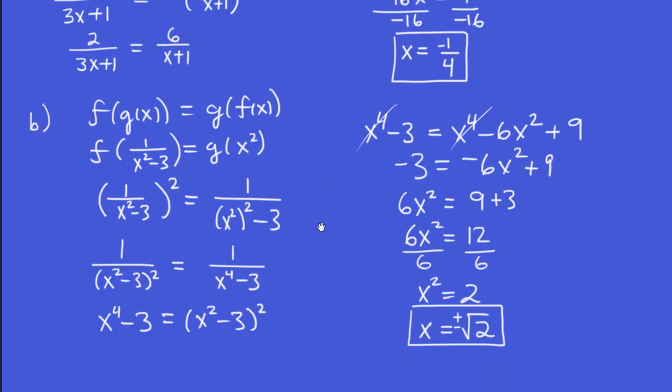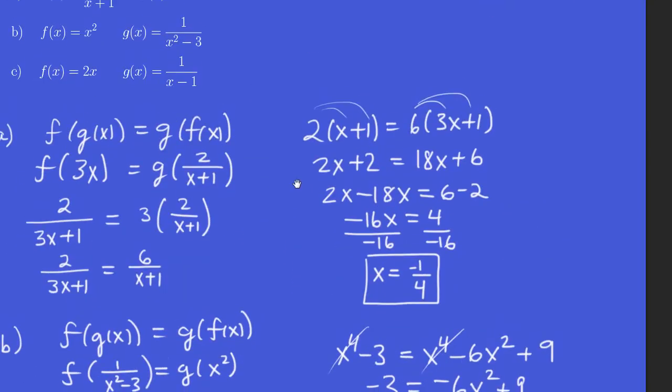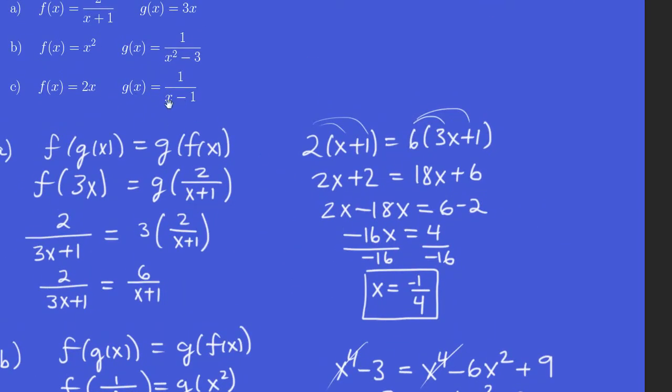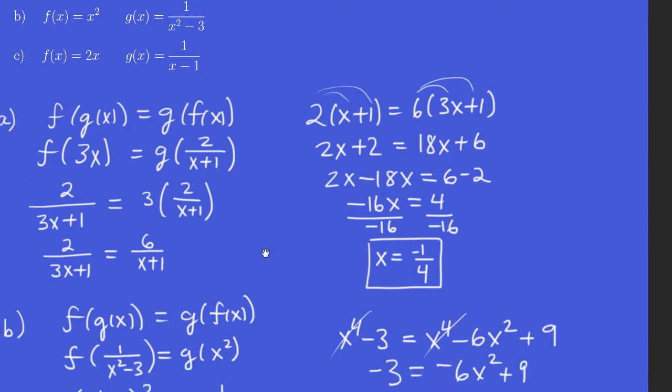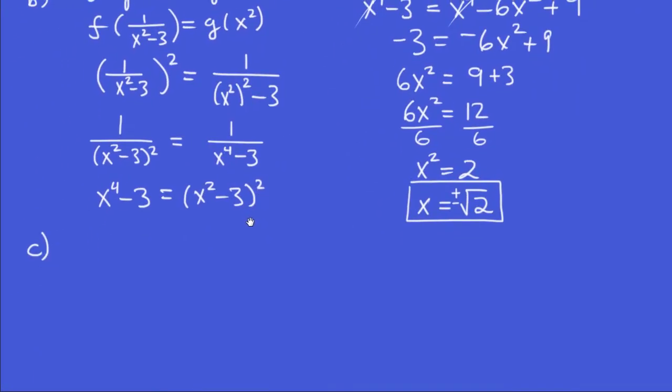All right, question C. So let's just remind ourselves what the functions are for C. We have 2x for F and 1 over x minus 1 for G. So let's squeeze that in here. So F, the equation we want to solve, is this.